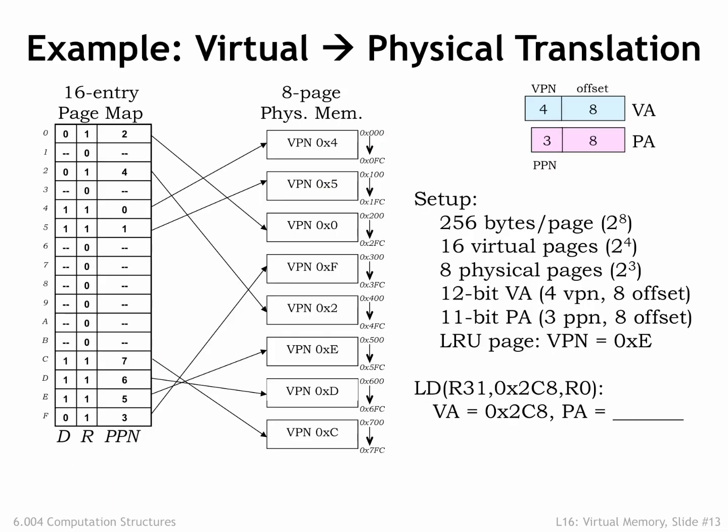Here's an example of the MMU in action. To make things simple, assume that the virtual address is 12-bits, consisting of an 8-bit page offset and a 4-bit virtual page number. So there are 2 to the 4th, or 16, virtual pages. The physical address is 11-bits, divided into the same 8-bit page offset and a 3-bit physical page number, so there are 2 to the 3rd, or 8, physical pages. On the left we see a diagram showing the contents of the 16-entry page map — an entry for each virtual page. Each page table entry includes a dirty bit D, a resident bit R, and a 3-bit physical page number, for a total of 5 bits. So the page map has 16 entries, each with 5 bits, for a total of 80 bits.